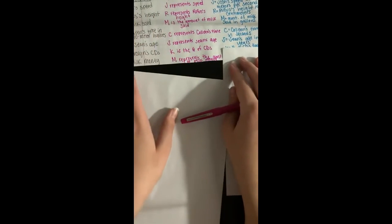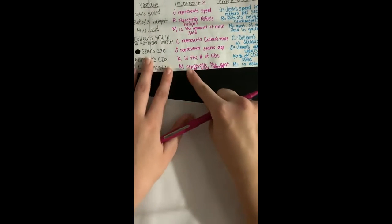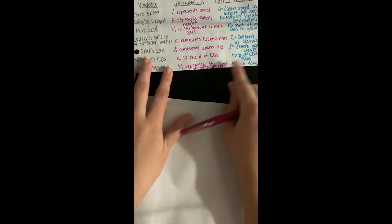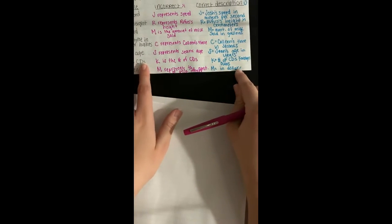And then finally the very last one, milk money. It's not enough to just say M represents the amount of milk money. Instead we could say the amount of milk money in dollars.